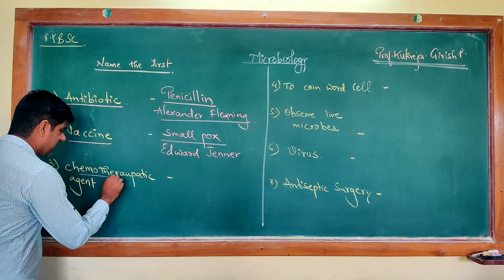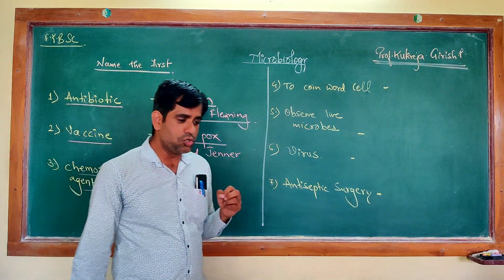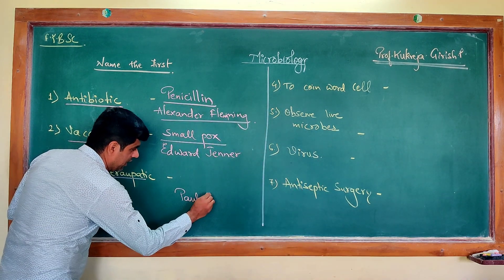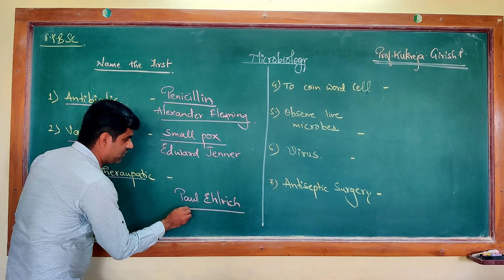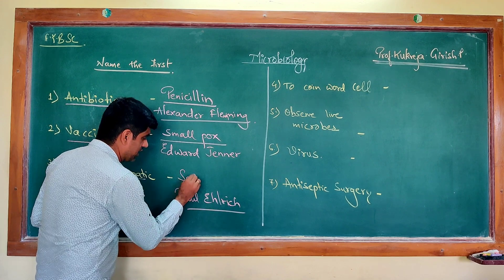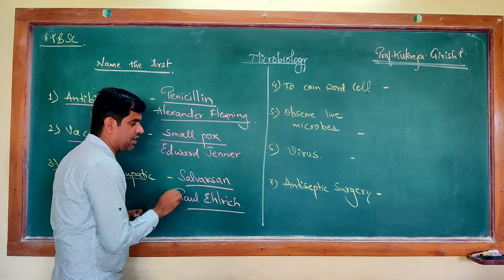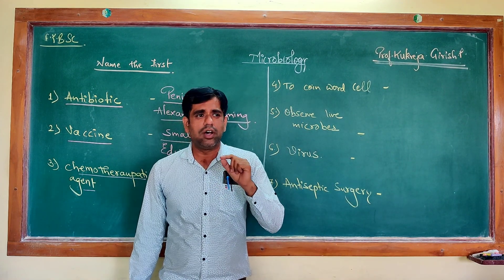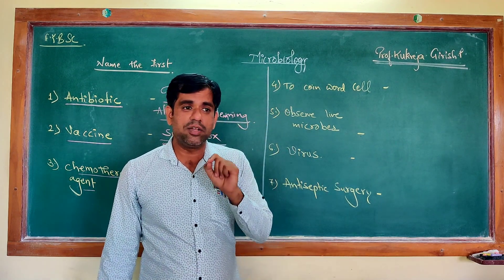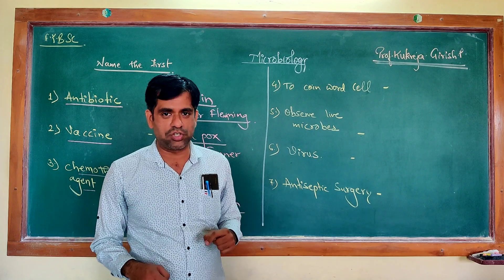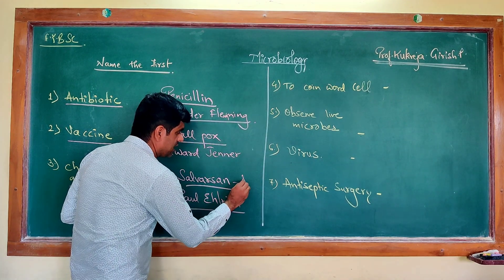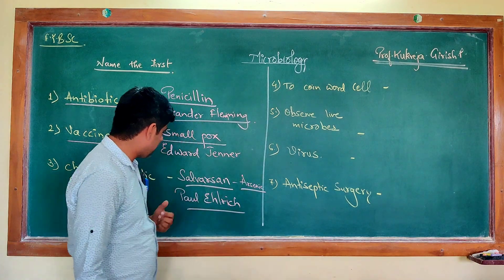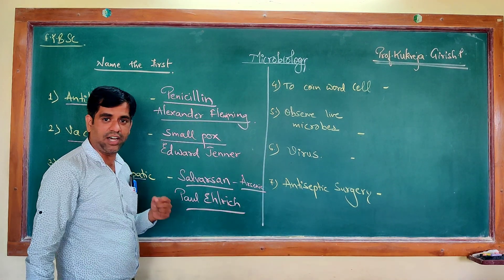The first chemotherapeutic agent — chemicals used to treat a particular disease. The concept and the father of chemotherapy is Sir Paul Ehrlich. He is credited for discovering the first chemotherapeutic agent, that is Salvarsan — an arsenic-containing compound which was used to treat syphilis. This was the development of a chemical agent which could specifically kill the pathogen without harming the host. Though his Japanese assistant Hata assisted him, the credit goes to Paul Ehrlich, the father of chemotherapy.